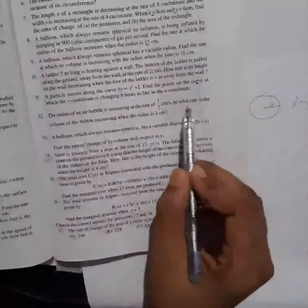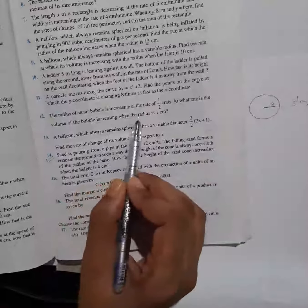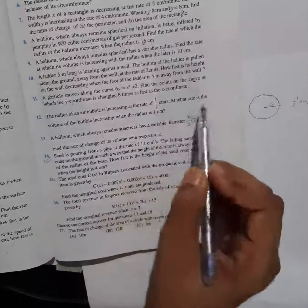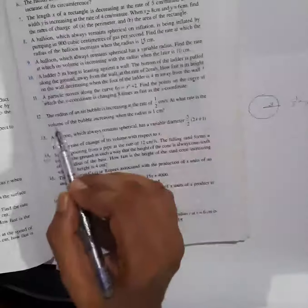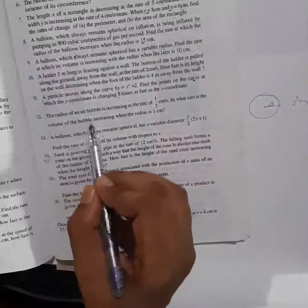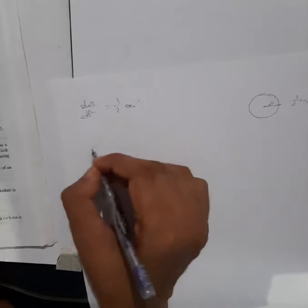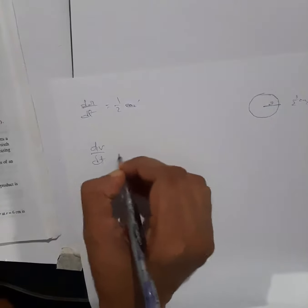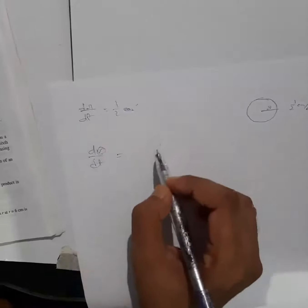We have to find at what rate the volume of the bubble is increasing when the radius is one centimeter. So first we find the rate of change of volume — that is, dV/dt.